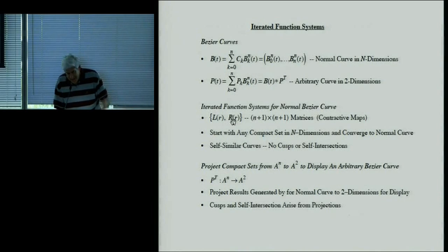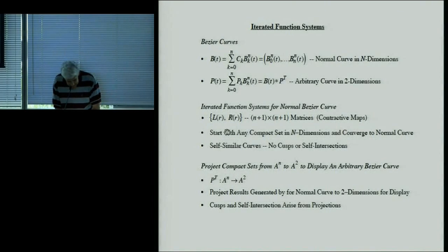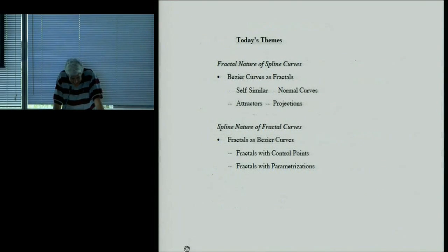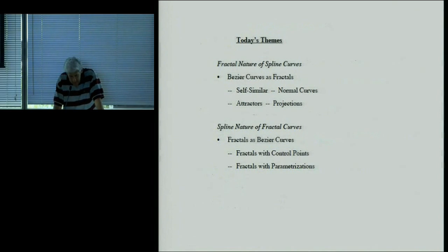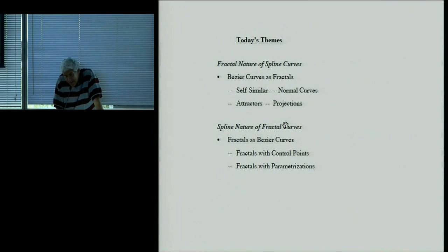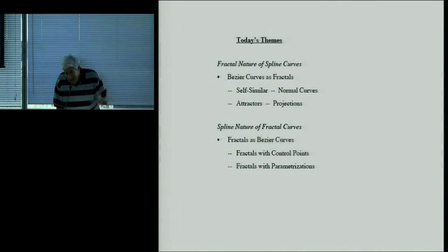So what I've shown so far is that Bézier curves behave like fractals: they're self-similar, you can iterate transformations and converge to the curve, and they're attractors independent of what you start with. But I think it's more interesting to show the spline nature of fractals — that fractals really have control points and parameterizations, just like polynomials.